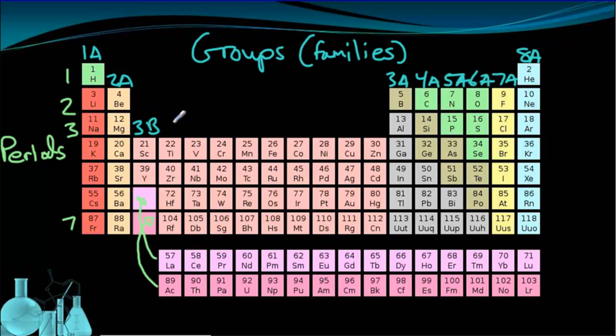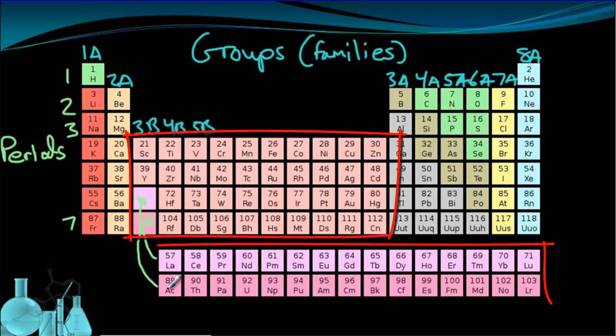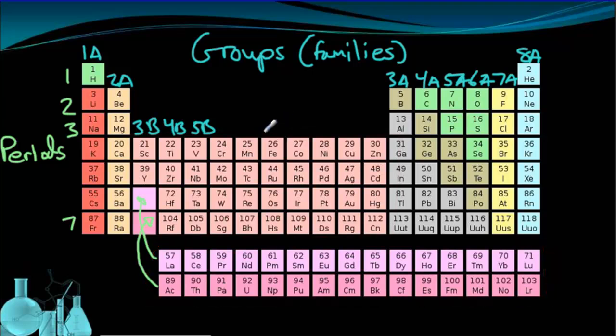The B numbering continues the same way. 4B, 5B, so on and so forth, and it actually gets a little weird at the end. We're not going to really worry about that. But suffice to say that this block here, as well as these rows that sort of stick into it, are all the B block of elements. And we call those transition metals.